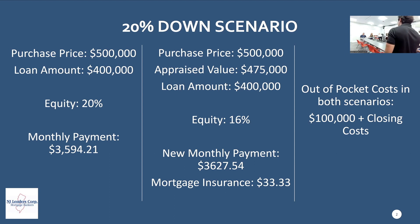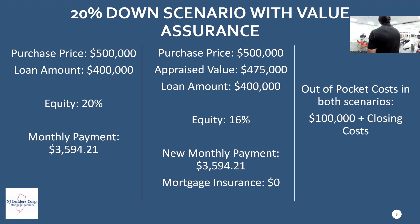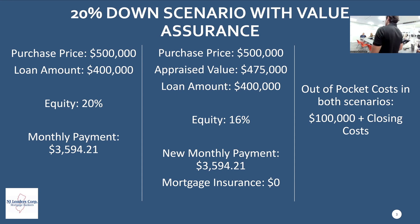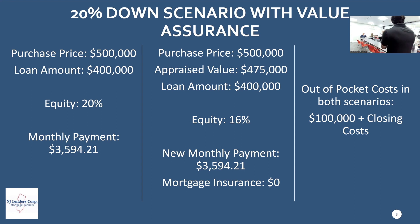That's scenario one. Now scenario two — perfect timing because Mark loves this product. You have that same 20% down borrower and you call us and say, can we do the value assurance program with this property? Let's say the answer is yes. Same scenario: home appraises $25,000 under. But because you have value assurance, you are not incurring monthly mortgage insurance — we take on the risk and cover the monthly mortgage insurance for the client. Their monthly payment does not change whatsoever. Using value assurance is a home run for the 20% down borrower.